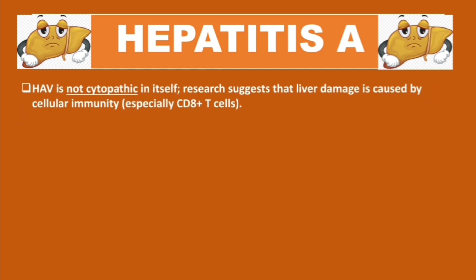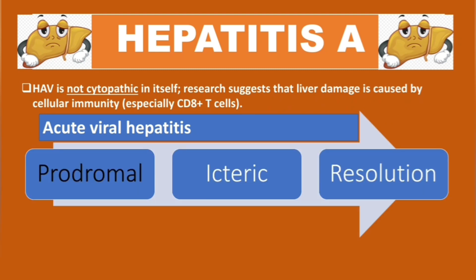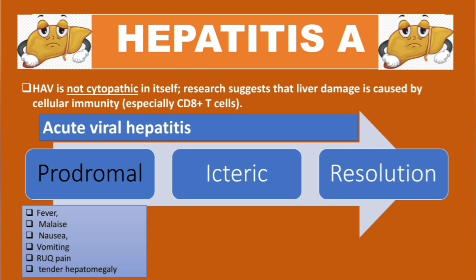Regarding pathogenesis, HAV is not cytopathic in itself. Research suggests that liver damage is caused by cellular immunity, especially cytotoxic T-cells, or CD8 T-cells. Hepatitis A virus usually causes acute viral hepatitis, meaning the infection lasts less than six months. This acute viral hepatitis has three phases: prodromal, icteric, and resolution. The prodromal phase is characterized by fever, malaise, nausea, vomiting, right upper quadrant pain, and tender hepatomegaly.